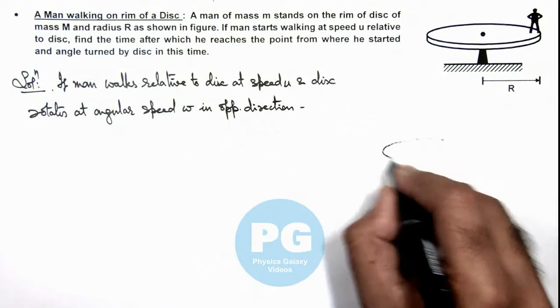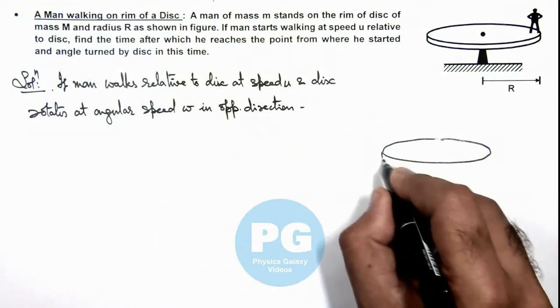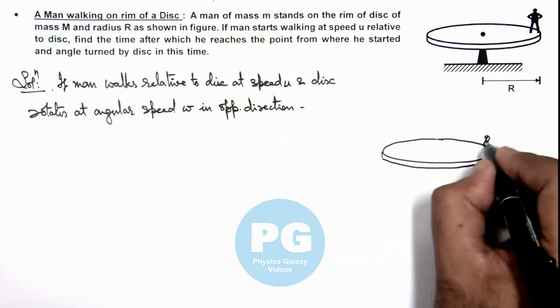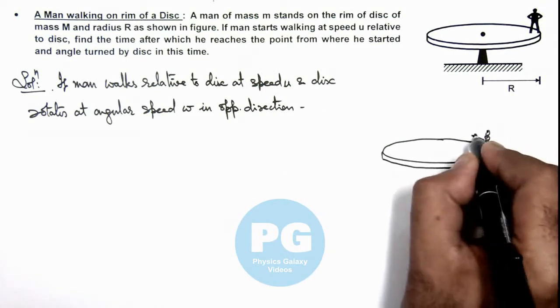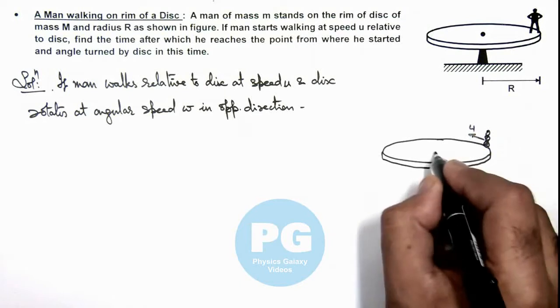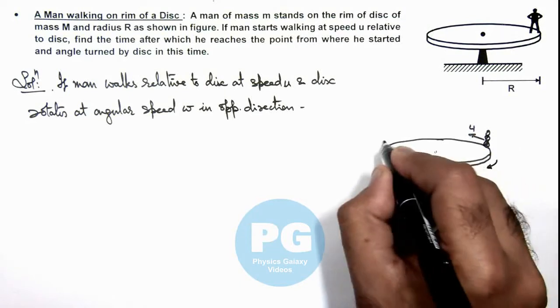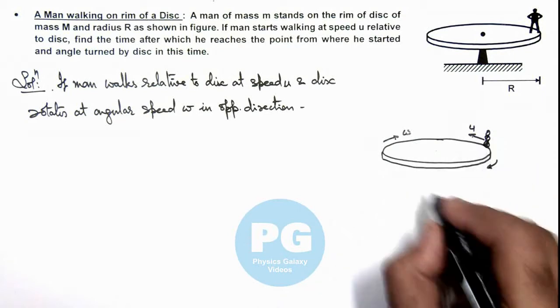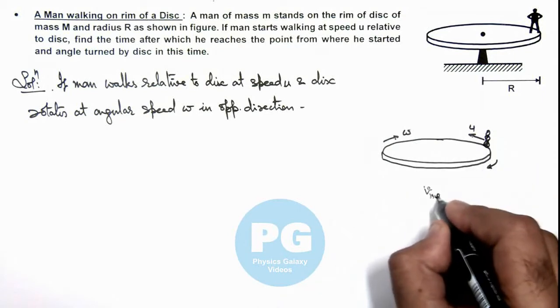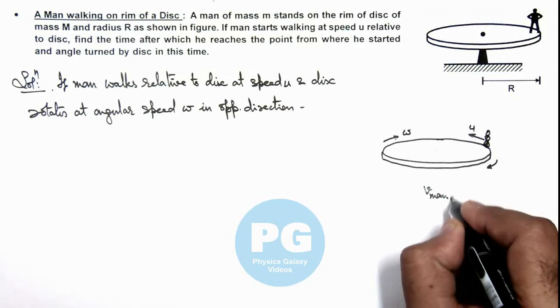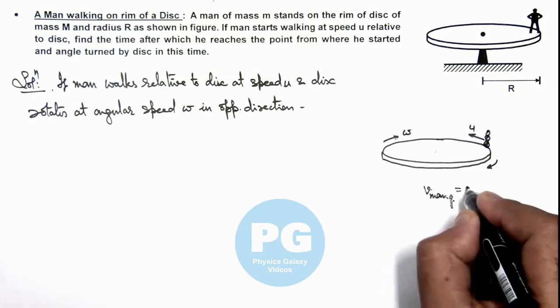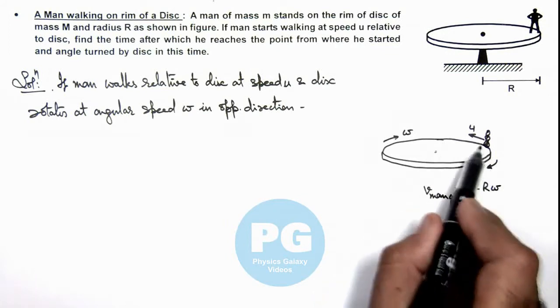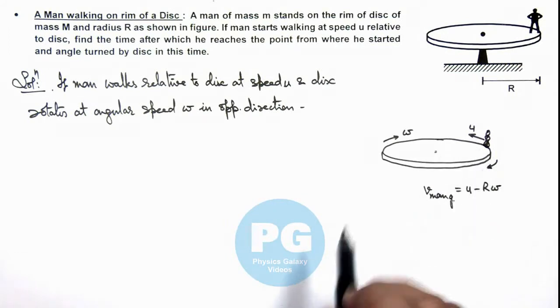Then we can see if this is the disc and the man is walking at a speed u relative to the disc, and the disc starts rotating in the opposite direction at angular speed omega, the velocity of the man with respect to the ground can be given as u minus r omega, because with the speed r omega the circumference of the disc is moving in the opposite direction.